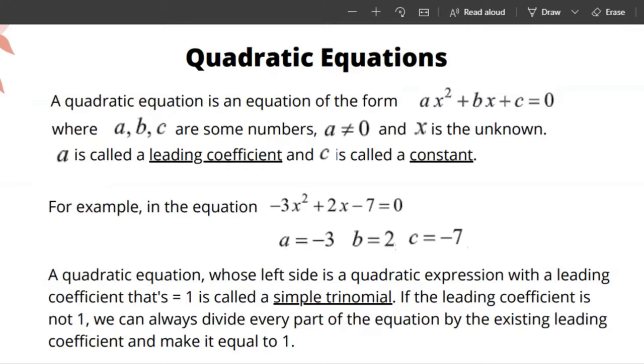In the equation -3x² + 2x - 7 = 0, a is -3, b is 2, c is -7.